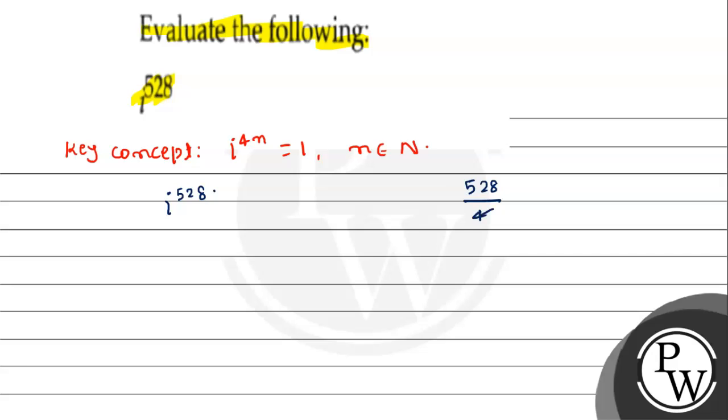We can express 528 as 4n, so iota to the power 528 is equal to 1. This is our final answer. Hope that you understood it well. Best of luck.